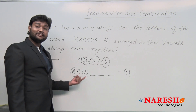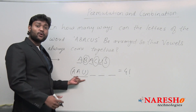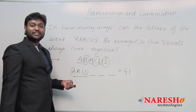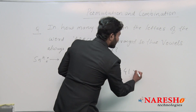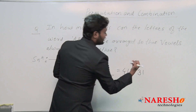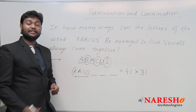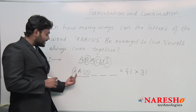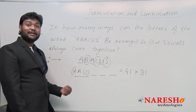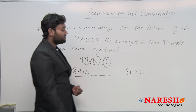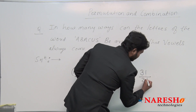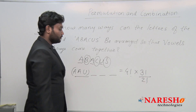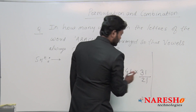Within that one vowel unit, we have three letters — A, A, U — which are also going to be arranged. So we multiply by 3!. However, since the letter A occurs two times, we divide by 2!. This gives us: 4! × 3! / 2!.